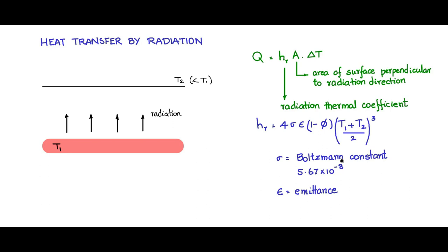Emittance is the energy emitted relative to that of a black body. It is a property of the material and depending upon the material the value of the emittance will be different.